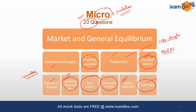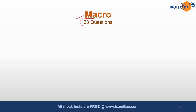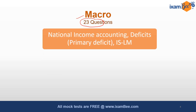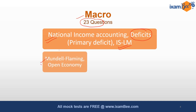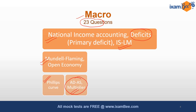Like micro, there were 23 questions from the macro part as well, and each and every aspect from macro was covered. Questions were mainly from national income accounting, there was a question for calculation of primary deficits, some questions related to shifts in the IS-LM curve, questions from Mundell-Fleming (open economy), a question on the Phillips curve about its shape, and a few multiplier-based calculation questions.